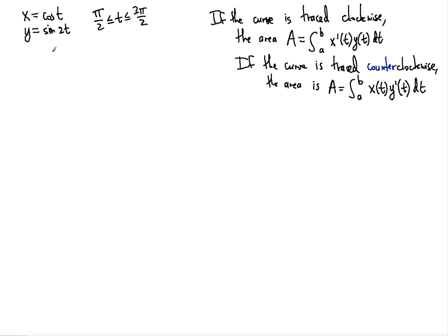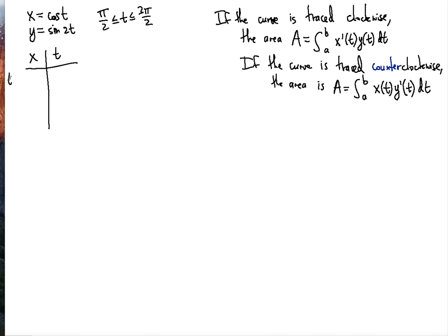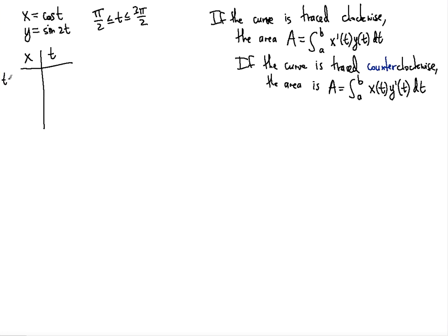We have to figure out how this curve will be traced — whether it's going to be traced counterclockwise or clockwise. For this reason, we're going to set up a table listing t values: starting from pi over 2, then 3pi over 4, and then t equal to pi. That should be enough to figure out how it's traced, and then in the xy plane we can try to plot it.